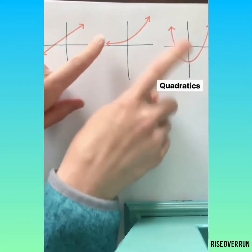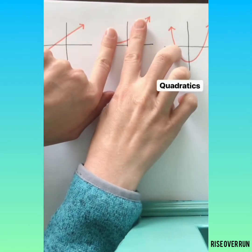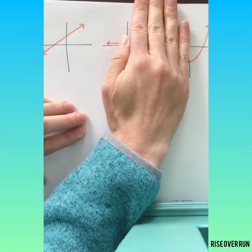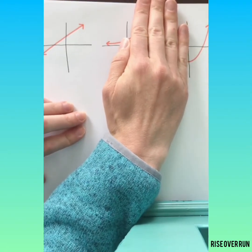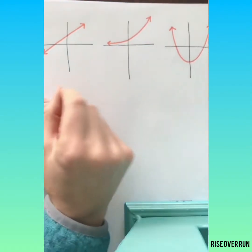Be careful if you're only seeing a small piece of a graph because then it might look like a different type of function. Sometimes we have to zoom out to see the whole picture.